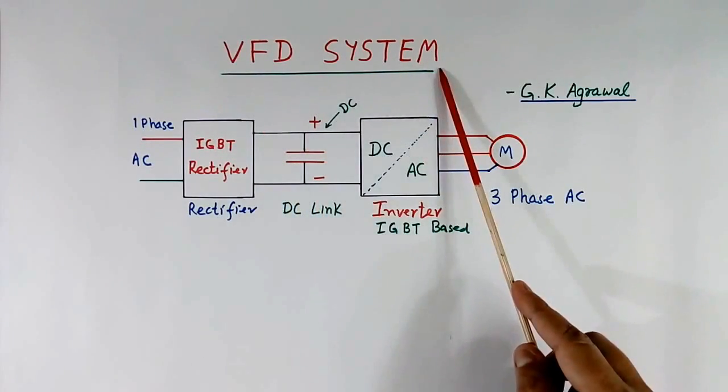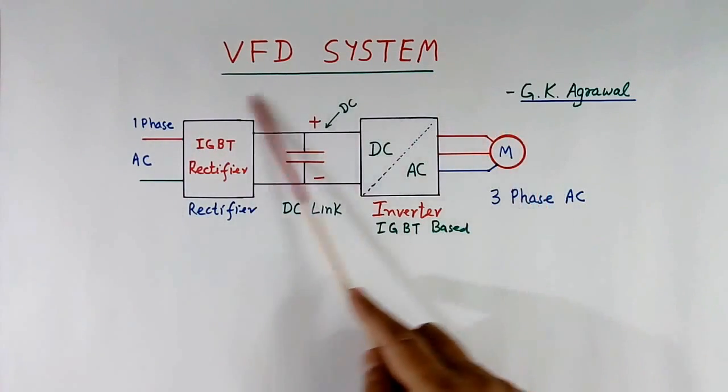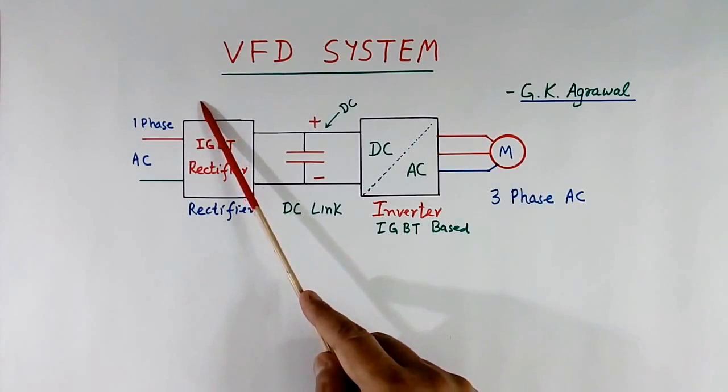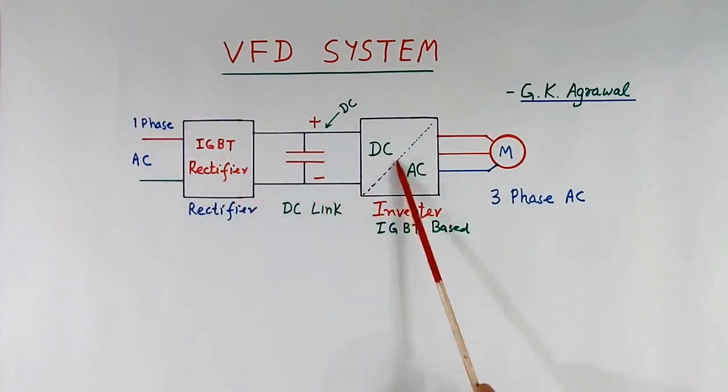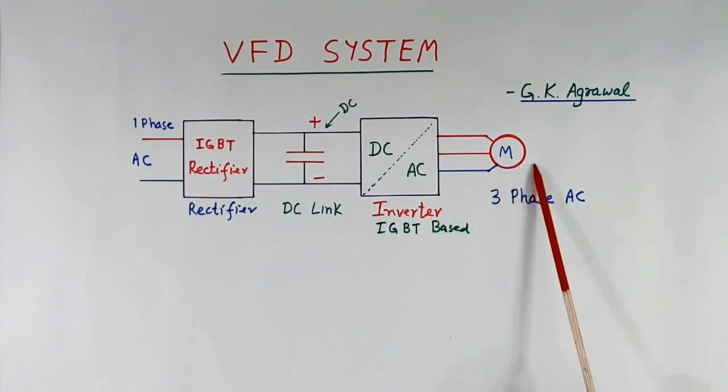VFD system consists of 4 parts. First is rectifier, second part is DC link, third part is inverter, fourth part is motor - a 3-phase AC motor. Nowadays in train engines, we use 3-phase AC motor. In old days, DC motors were used, but nowadays in latest technology, 3-phase AC motors are used.